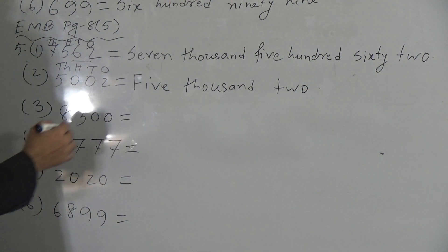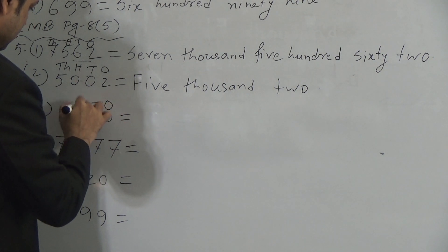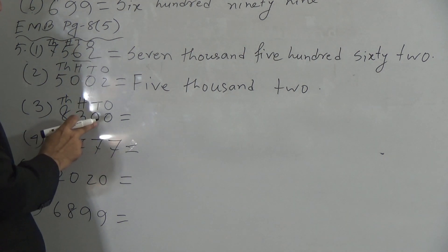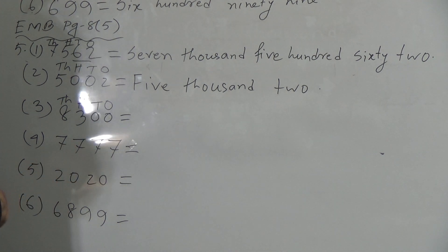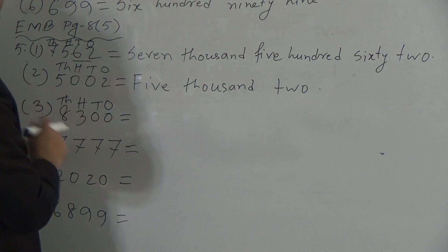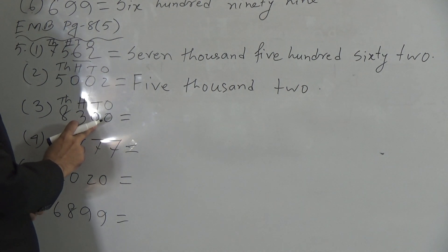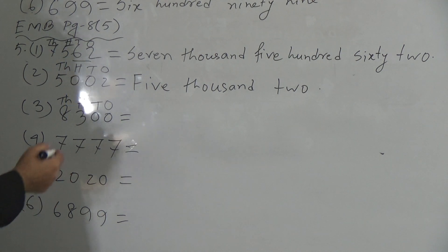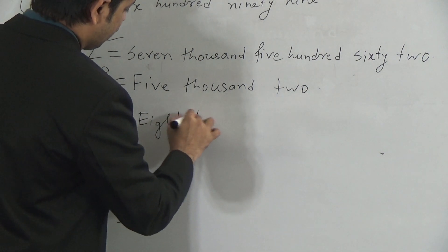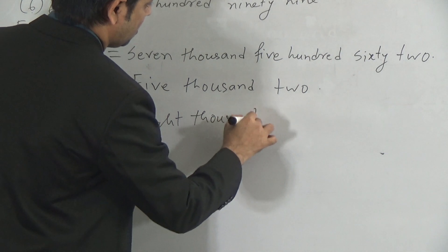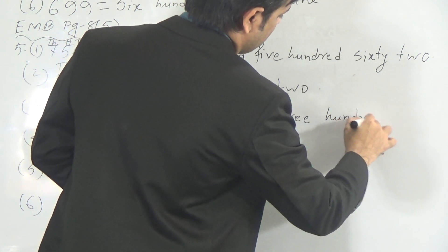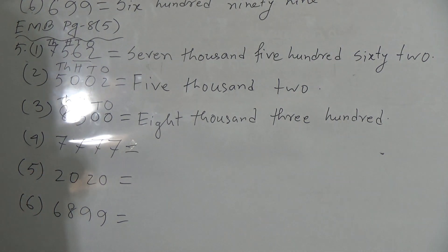Now the next number: 8 is in the 1000's position, 3 is in the 100's position, 0 is in the 10's position, and 0 is in the 1's position. So we have to say 8,300. As there are no digits except 0 in the 10's and 1's positions, we read it as 8,300.